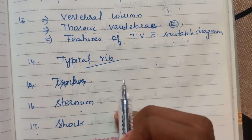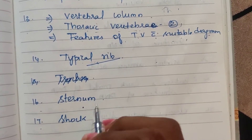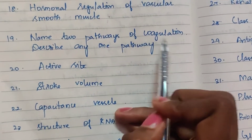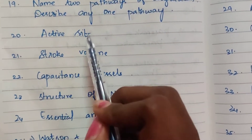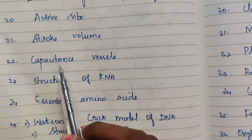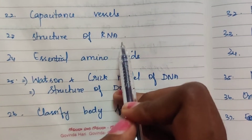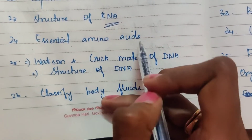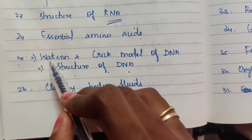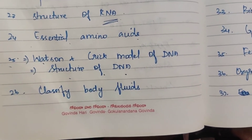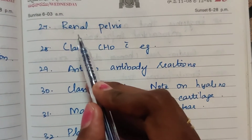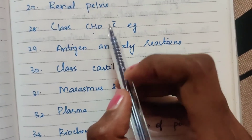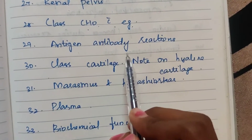Sixteenth one: sternum. Seventeenth one: shock — related topics are easy to cover and time-saving. Eighteenth one: hormonal regulation of vascular smooth muscle. Nineteenth one: name two pathways of coagulation and describe any one pathway. Twentieth one: active site. Twenty-first: stroke volume. Twenty-second: capacitance vessels. Twenty-third: structure of RNA — ribonucleic acid. Twenty-fourth: essential amino acids. Twenty-fifth: structure of DNA — Watson and Crick model. Twenty-sixth: classify body fluids. Twenty-seventh: renal pelvis. Twenty-eighth: classification of carbohydrates with examples.